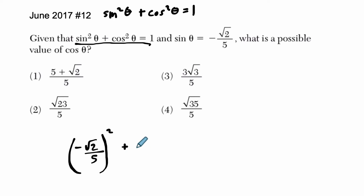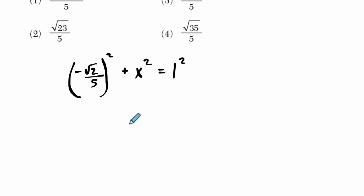And we're going to get some cosine value. Let's use x for cosine, because cosine is usually paired with the x value in a unit circle. Equals the hypotenuse squared, which in this case is 1 squared. And we're solving for x, which is going to represent our cosine. So if we square radical 2 over 5, what do we get?